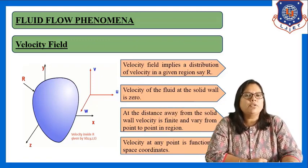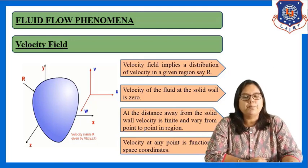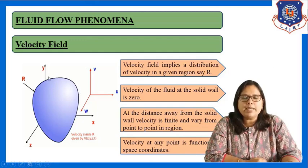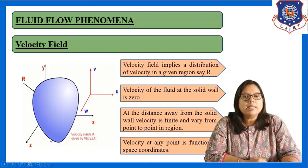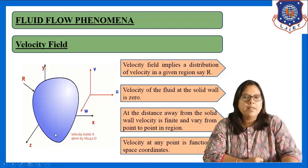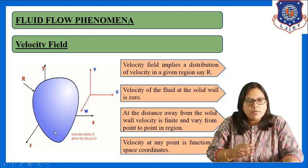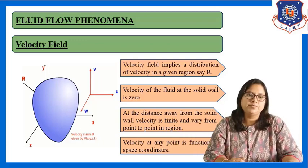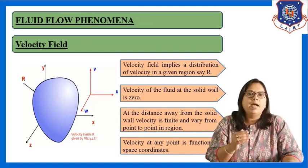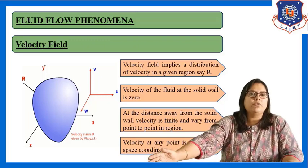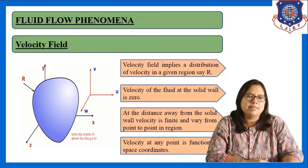Velocity of the fluid at the solid wall is zero. In this region, the velocity at the solid wall of region R is zero. In any situation or any system, velocity of the fluid at the wall is zero. As we go away from the solid wall, velocity is increasing.